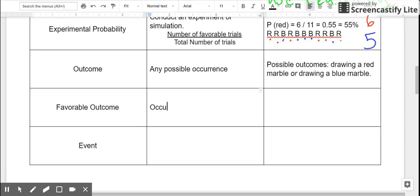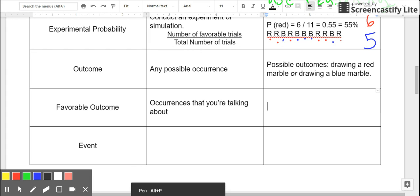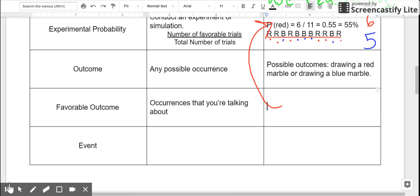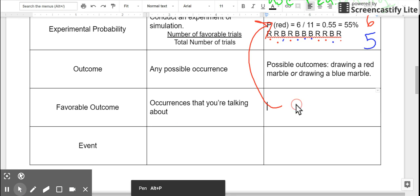Favorable outcomes are the occurrences that you're talking about. So it's not what you prefer, even though it has that word favorable. It's the occurrences that we're talking about. So for example, when we were looking at our experimental probability, we were looking at the probability of drawing a red marble. So that's the one we care about. So here, the favorable outcome was drawing a red marble.